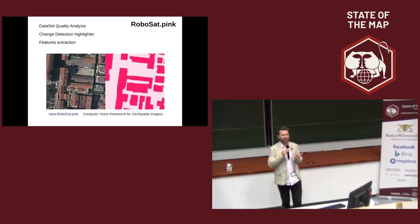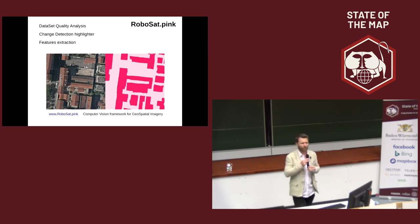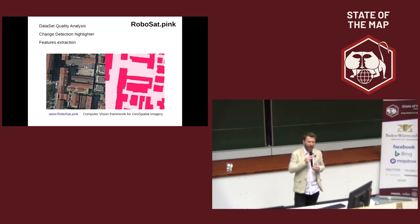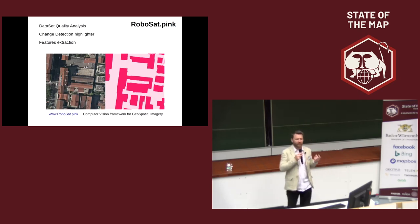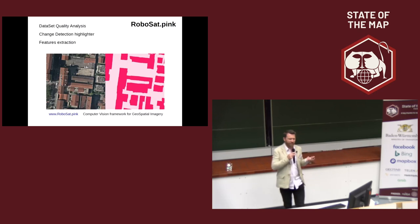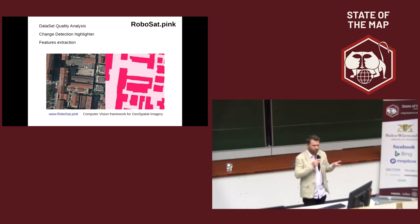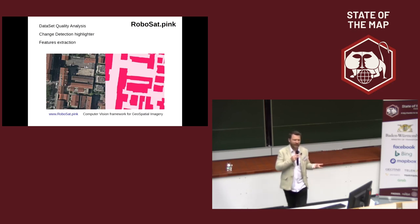So what kind of solution do we use? We use RoboSat.pink. It's a computer vision framework dedicated to geospatial imagery, and its aim is to perform three kinds of features: data quality analysis, change detection, and feature extraction.